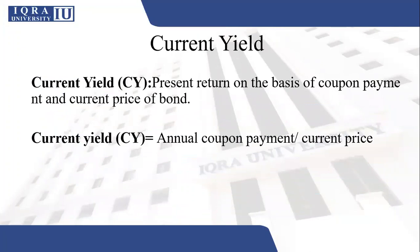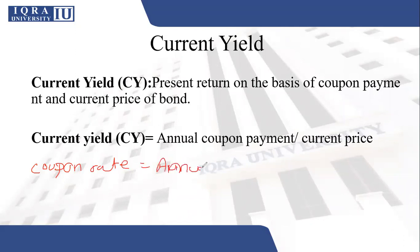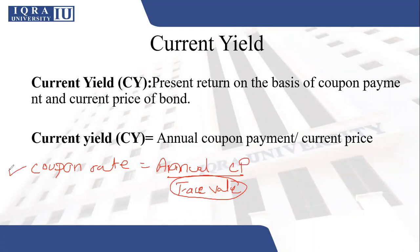Current yield is the present return on the basis of coupon payment and the current price of the bond. The formula for current yield is the annual coupon payment divided by the current price. In contrast, the formula for coupon rate is the annual coupon payment divided by the face value. So dividing by face value gives you the coupon rate, but dividing by the current price gives you the current yield.